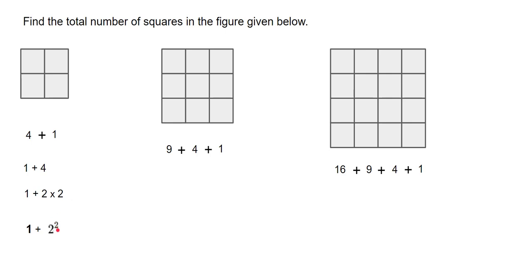If it is two to the power two, it means two times two. If it is two to the power three, it means two times two times two. So this portion is one times one plus two times two — I have just put that one as one, because one times one is one.